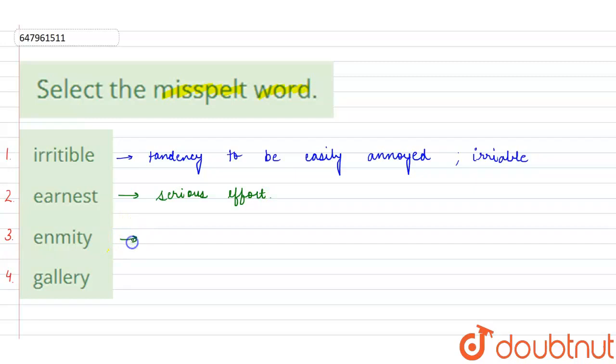Now about enmity. Enmity is derived from the word enemy. Enmity means a feeling of active opposition or a feeling of hostility.